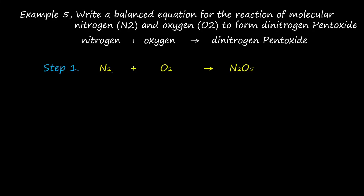The symbol for nitrogen is N₂, because nitrogen does not exist in monoatomic form — it exists in diatomic form. Oxygen also exists in diatomic form, so it is O₂. Dinitrogen pentoxide: 'di' indicates 2, so N₂, and 'penta' indicates 5, so oxygen is 5 — giving N₂O₅. The second step is to place the total valence of each atom above it.